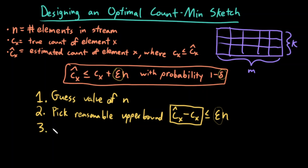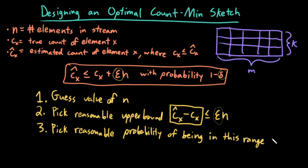The third thing that I need to do is pick a reasonable probability of being in this range, which, remember, was 1 minus delta. So pick a probability. So I want to be 90% sure that I'll be in this range that I've just picked—that would mean delta is 10%. I want to be 99% sure that I'm in this range that I've picked—delta would be 1%. So pick the reasonable probability of being in this upper bounded range, and that defines delta.